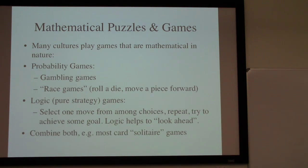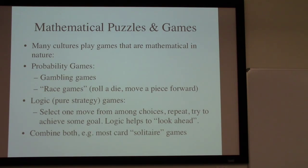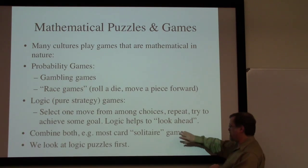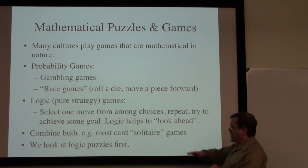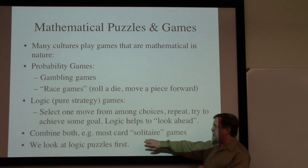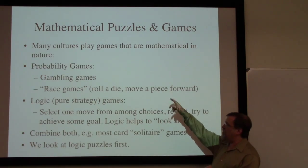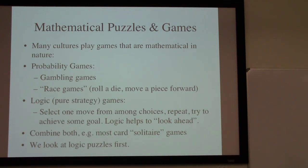There are certain kinds of combinations of these things. A lot of solitaire card games are like that — you're working through the logic about where cards might move. But since they often have hidden cards, there's some randomness involved. We're trying to take actions that are likely to be good, but since we don't know which cards are face down, there's a randomness involved. We're going to focus on logic puzzles first. Understanding how to process logic puzzles will help us when we get into probability games a bit later.